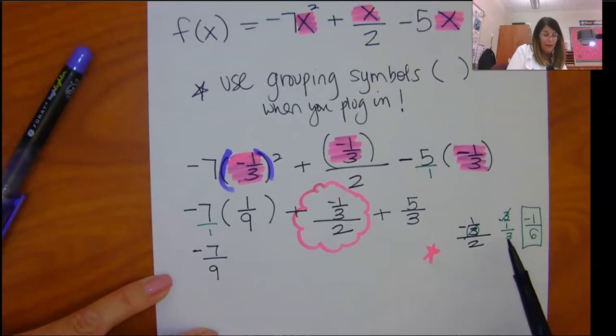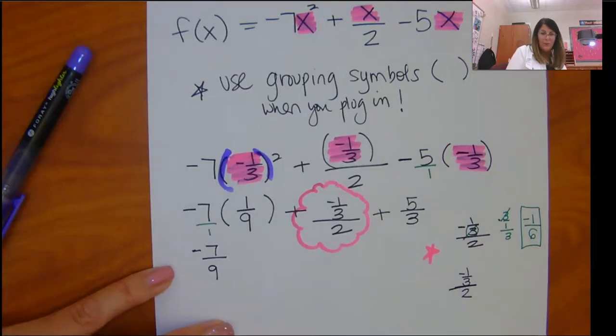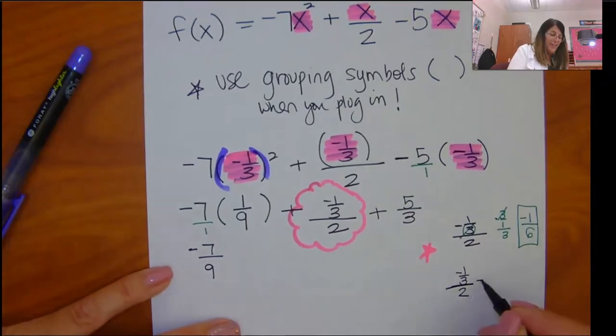So first, I could multiply by whatever's in the denominator over itself. Or I could think of this as 1 third divided by 2. Go back to when you were in grade school and you learned how to divide fractions. Think of that as negative 1 third divided by 2. So remember how when I write 2, it's 2 over 1.